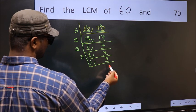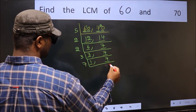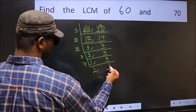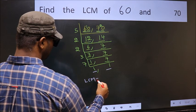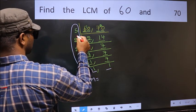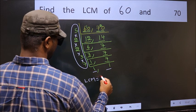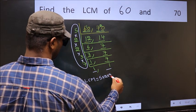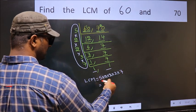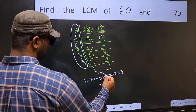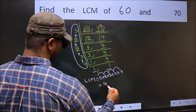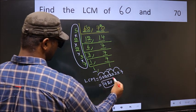So focus on the other number, 7. 7 is a prime number, so 7 ones are 7. We got 1 in both places. So our LCM is the product of these numbers: 5 times 2 times 2 times 3 times 7. Let us multiply these: 5 times 2 is 10, times 2 is 20, times 3 is 60, times 7 is 420. So 420 is our LCM.